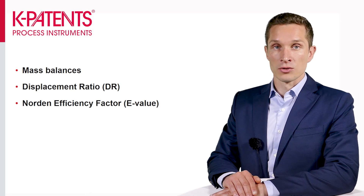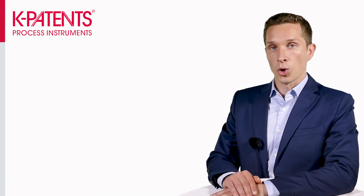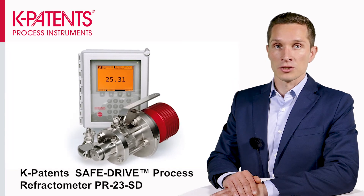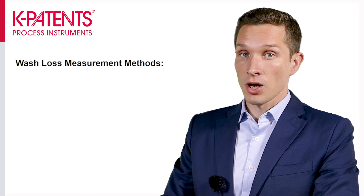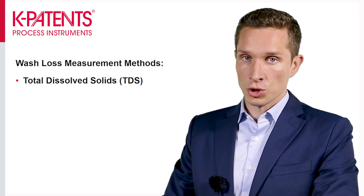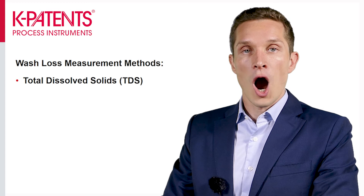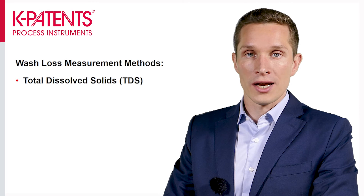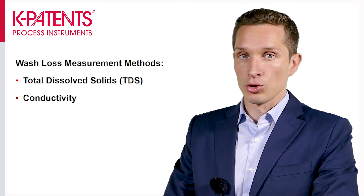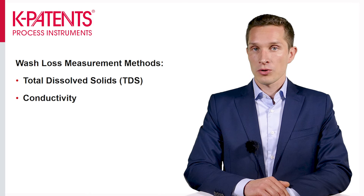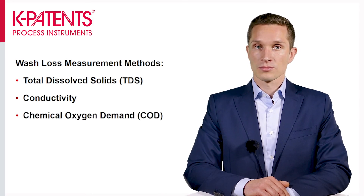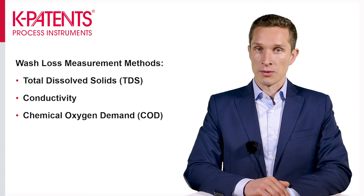Other important parameters include mass balances, displacement ratio, and the northern efficiency factor. These indicate the true washing efficiency and even help to further enhance it. The wash loss as well as these important parameters can be obtained in real time by using K-Patents inline solids measurements. Dissolved solids have always been used to measure wash loss and washing efficiency. However, it has not been possible to measure dissolved solids inline, and therefore the inorganic changes by conductivity have been used as a real-time wash loss indication. Another common method to indicate wash loss has been chemical oxygen demand, COD, as it correlates with bleaching chemical consumption.